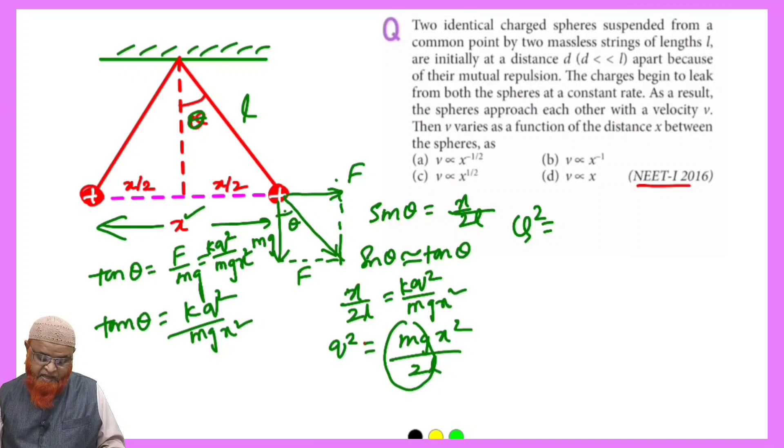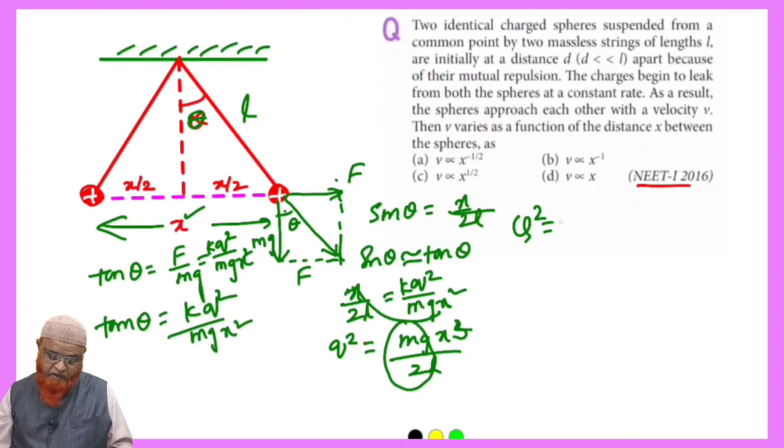Here x will become x³ because if you do cross multiplication it is going to become x³. Therefore q² is directly proportional to x³, and k taken as k into x³.